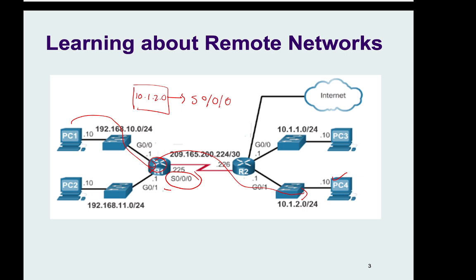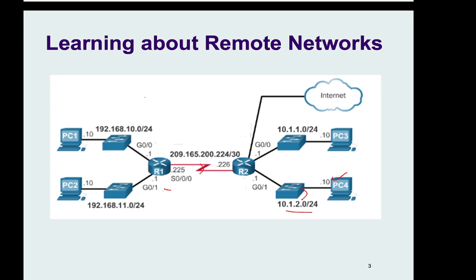It cannot happen on its own. There must be some way that the router is getting this information — that for reaching 10.1.2, it should go via a particular direction. So what do we mean by remote networks? Remote networks are those with which a router has no direct connection.